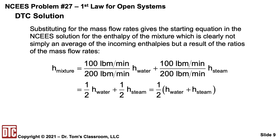That simplifies to one-half h-water plus one-half h-steam, which looks like half times (h-water plus h-steam). This is the first equation — it looks like you're just averaging the enthalpies, which is confusing, but it doesn't need to be.